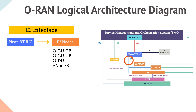The E2 interface also enables the collection of metrics from the RAN elements to the near-RT RIC. E2 interface comes into action in use cases like quality of service optimization, network traffic steering, RAN slice assurance, performance counter reporting and a lot more.